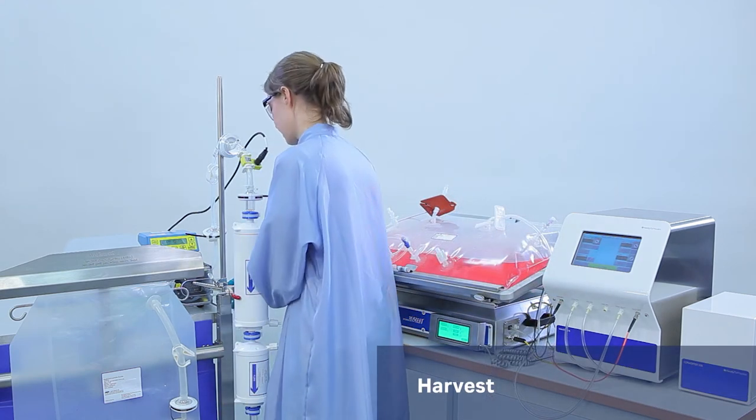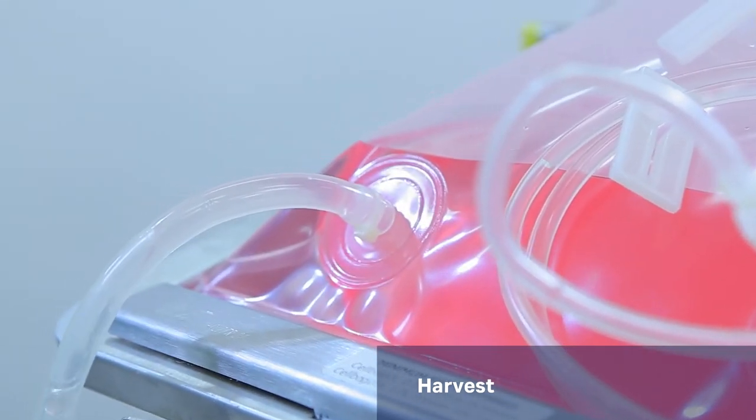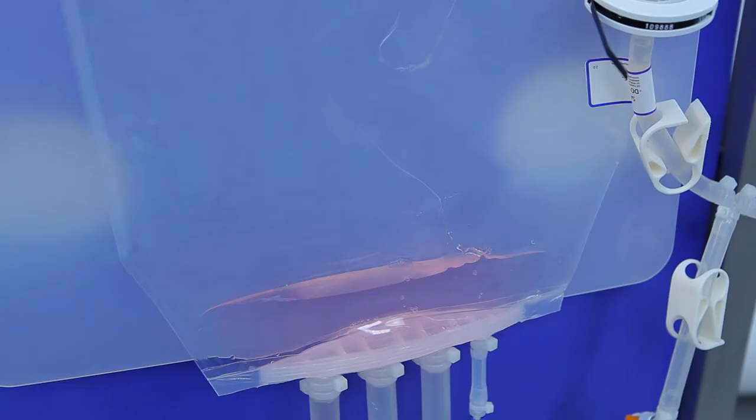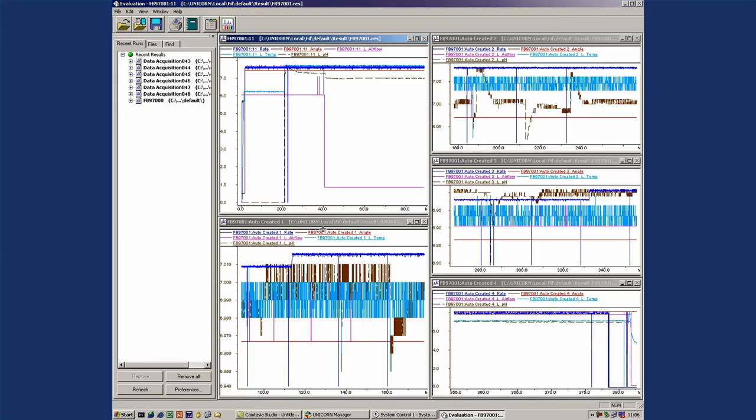When cell cultivation is done, harvesting is easily performed by fusing or connecting the cell bag to the appropriate clarification device. The cell cultivation data can be analyzed using Unicorn DAC. A result file is generated and the Evaluation module offers facilities for presentation and evaluation of the curve data.